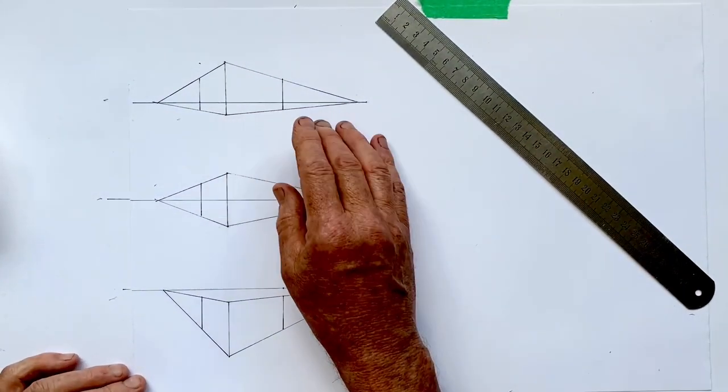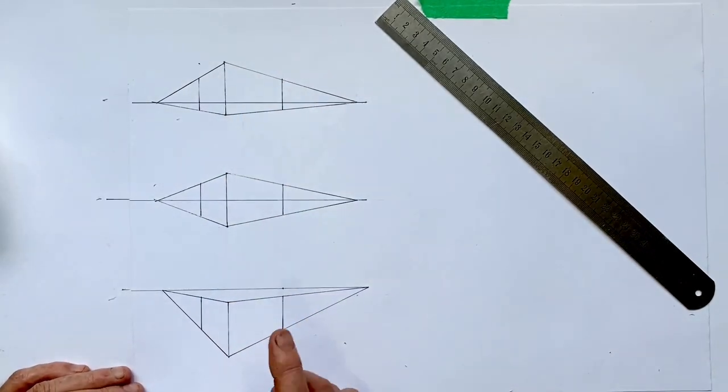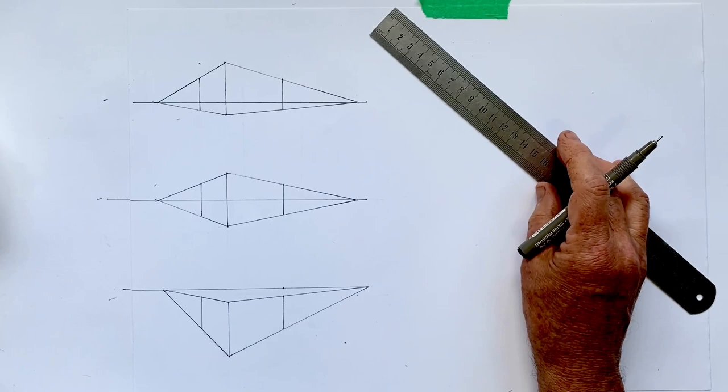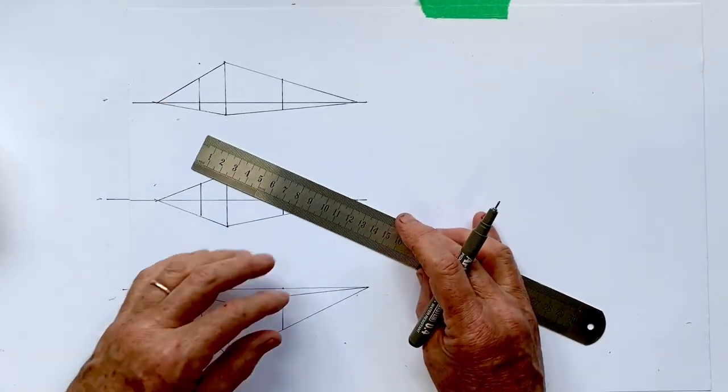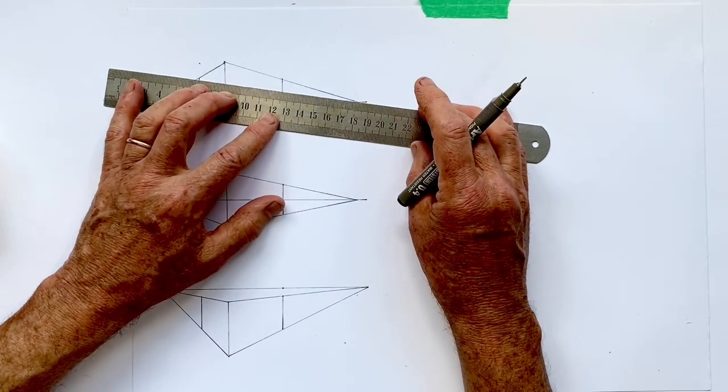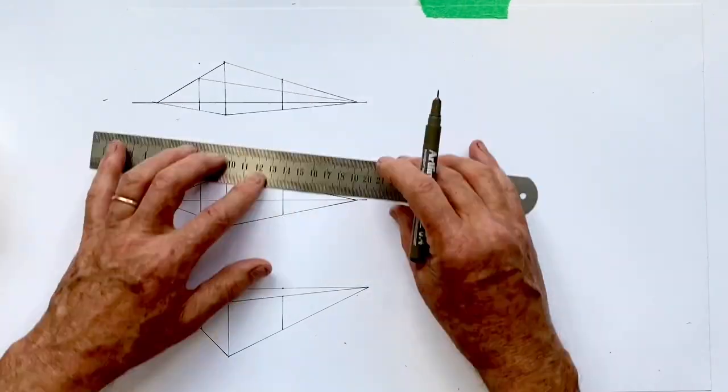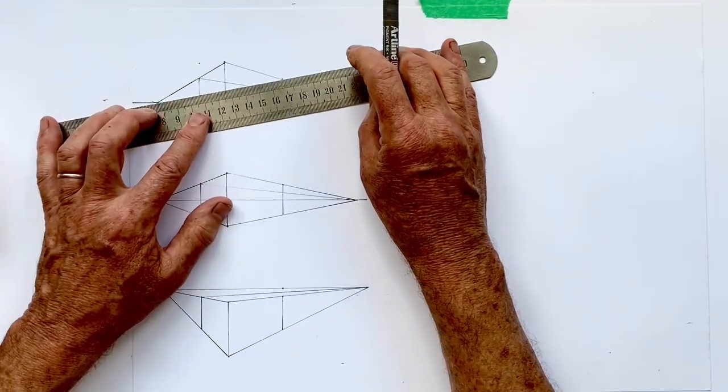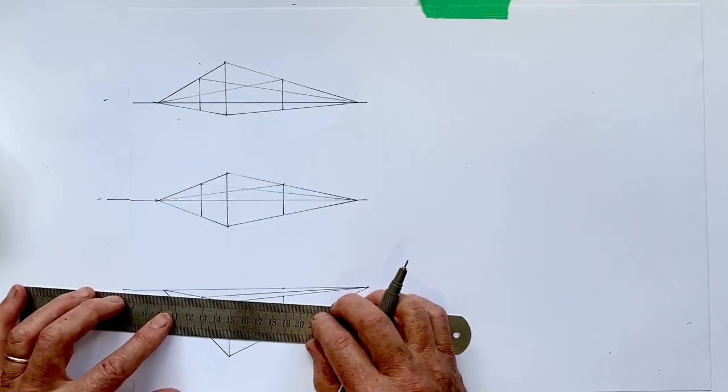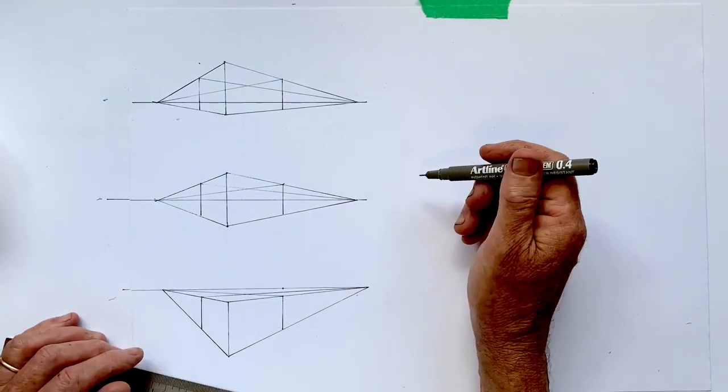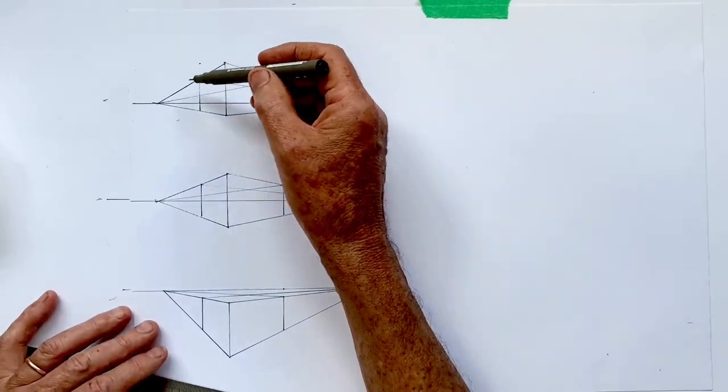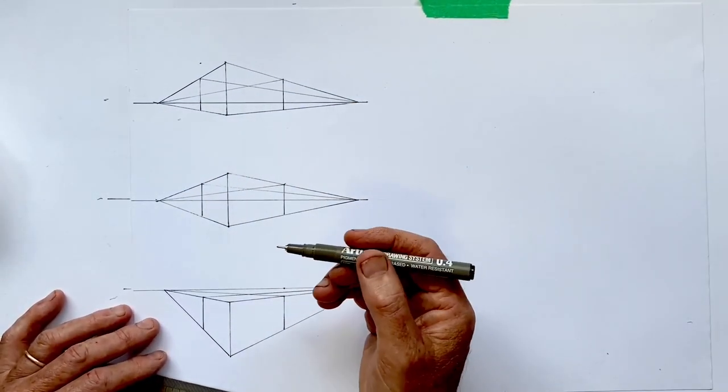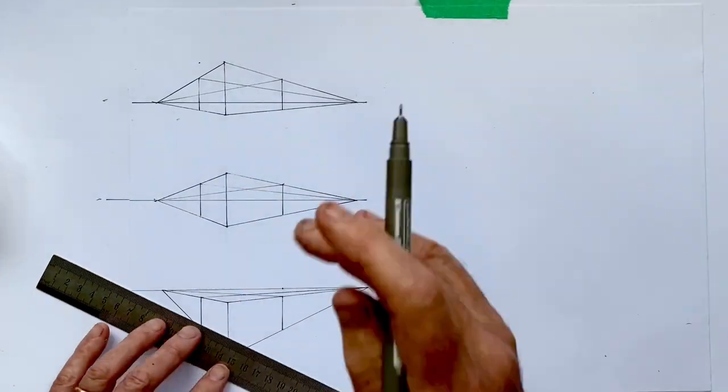Now in the first two views, we don't see it because we're looking up. In the third view, we're looking down, so we will actually see that. And that's simply by using the vanishing points from the corners that we already have. Now the easiest way to find the center of a rectangle is to draw in the diagonals, and where they cross is going to be the center of that shape.